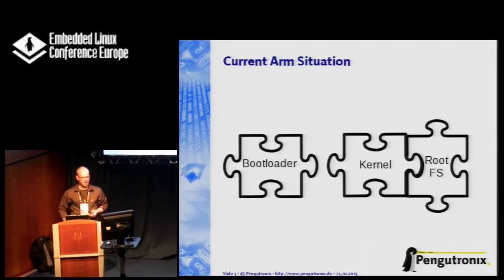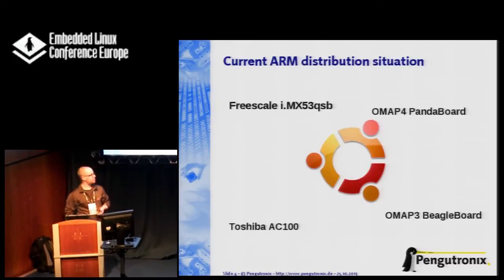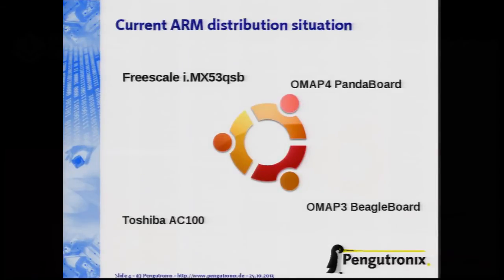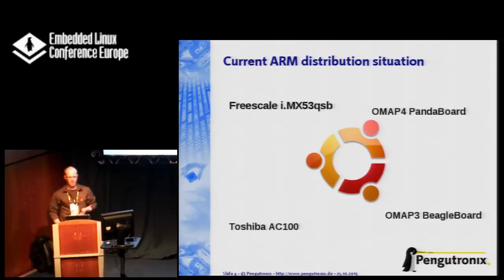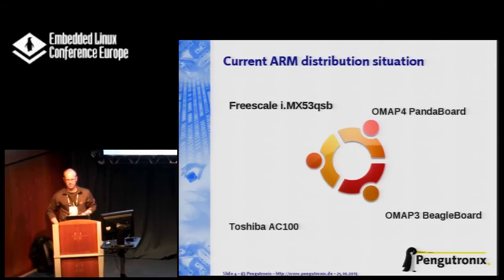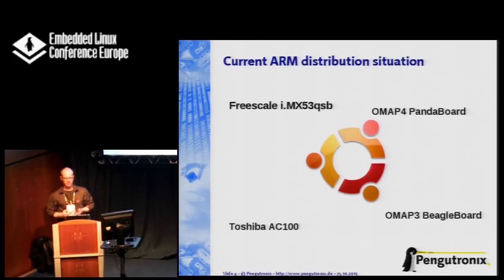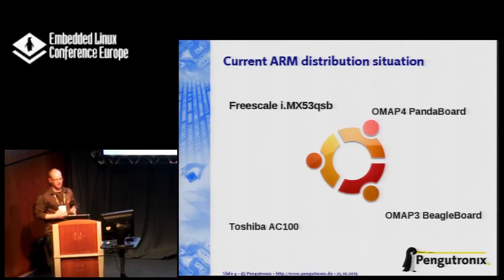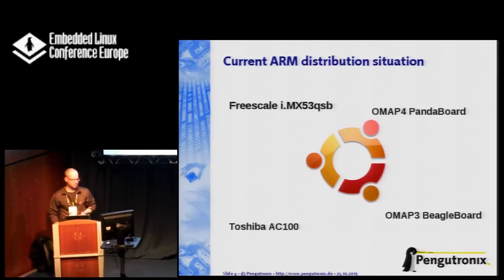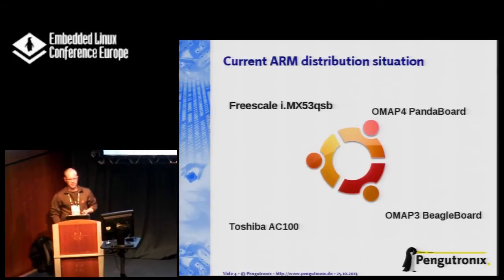Let us have a look at the different distributions. Right now, Ubuntu doesn't really support ARM broadly — it supports the IMX53 Quick Start board, the OMAP4 Panda board, OMAP3 Beagle board, and a Toshiba AC100. This list isn't complete. There are other boards which are supported, and sometimes only a single version is supported, and the next Ubuntu version supports a different set of boards.